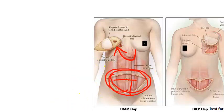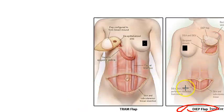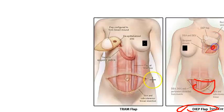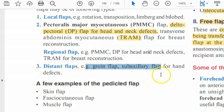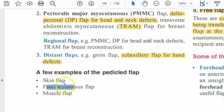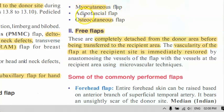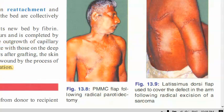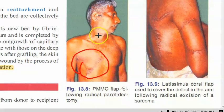The best option for breast reconstruction is actually the DIEP flap — deep inferior epigastric perforators — which appears to be a free flap, taken from the abdomen and placed at the breast site. There are also distant pedicled flaps like the subclavian flap for hand defects. Examples of pedicled flaps by composition include skin flaps, facial cutaneous flaps, muscle flaps, myocutaneous flaps, adipofascial flaps, and osteocutaneous flaps.